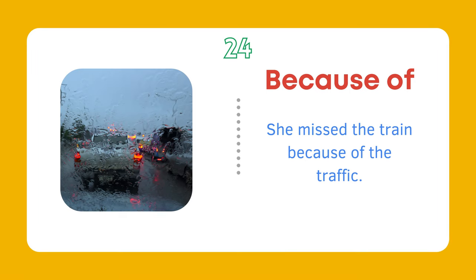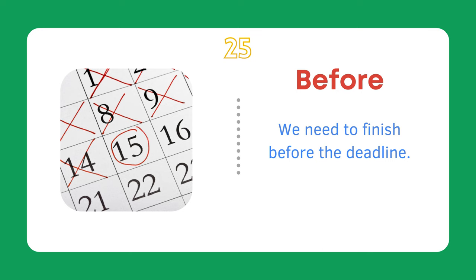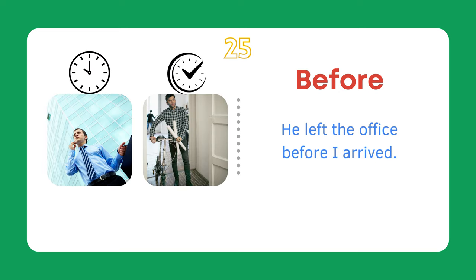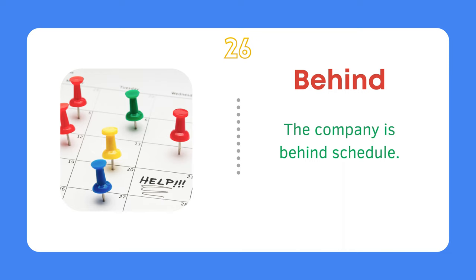Because of. She missed the train because of the traffic. Because of the rain, we stayed inside. Before. We need to finish before the deadline. He left the office before I arrived. Behind. The car was behind us. The company is behind schedule.